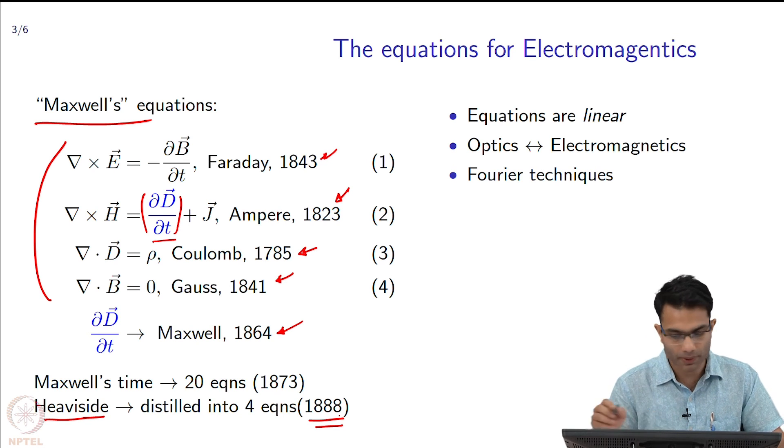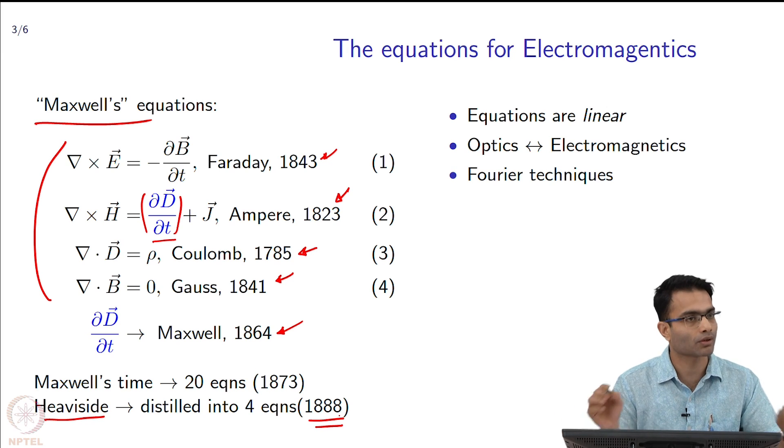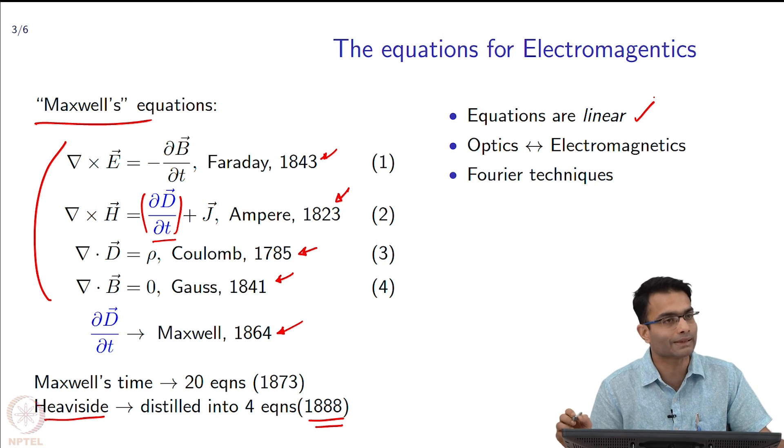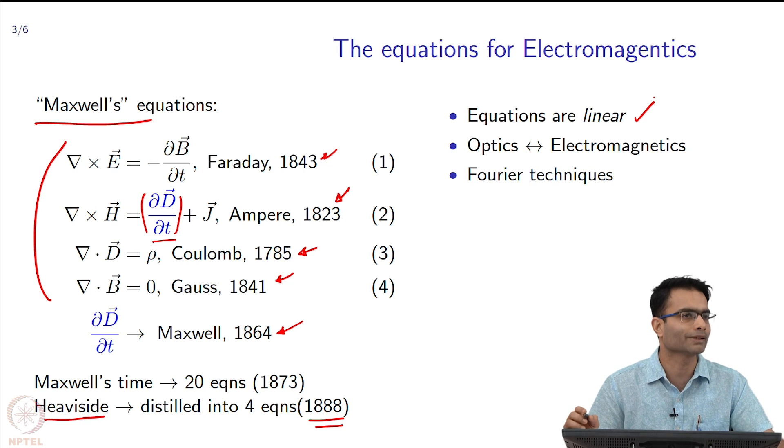As you can look at these 4 equations, they are linear. There is no E square, there is no E into H - they are all by themselves in a linear form. These equations are linear and that is why people were able to solve them analytically for a large part.